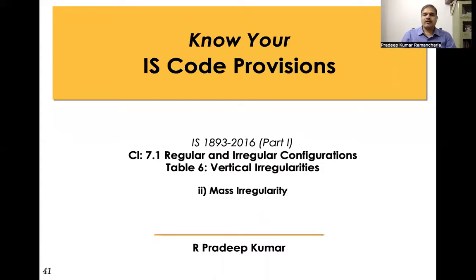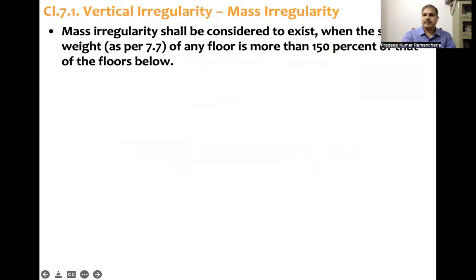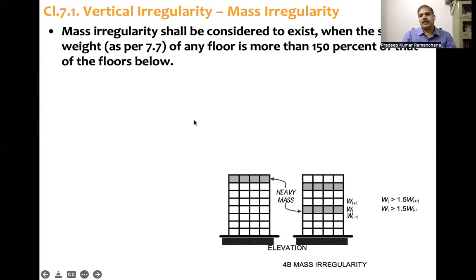In Table 6 on vertical irregularities, mass irregularity is defined as follows: mass irregularity shall be considered to exist when the seismic weight, as per clause 7.7, of any floor is more than 150% of that of the floor below.